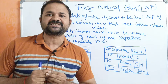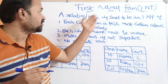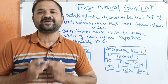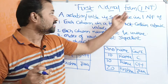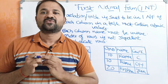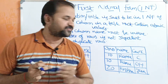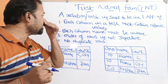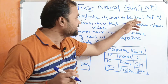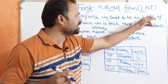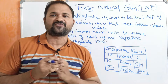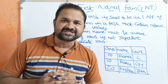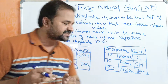Let us discuss first normal form in DBMS. In short, we can call it 1NF. A relation or table is said to be in first normal form if it satisfies four conditions.